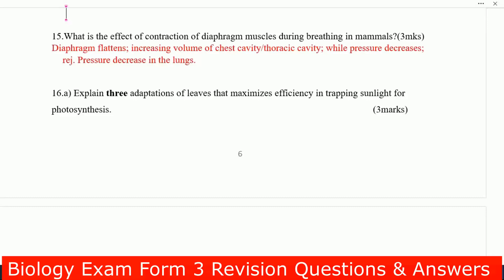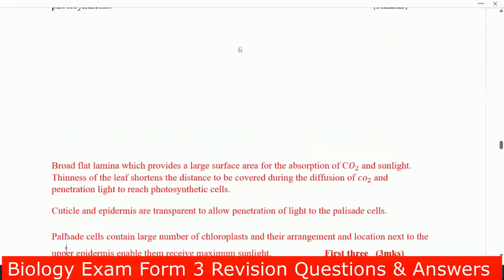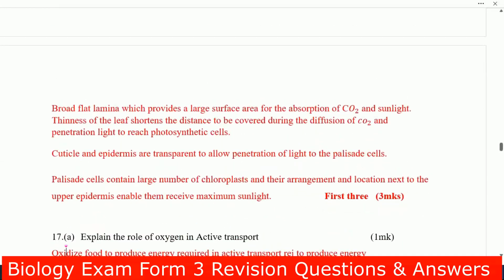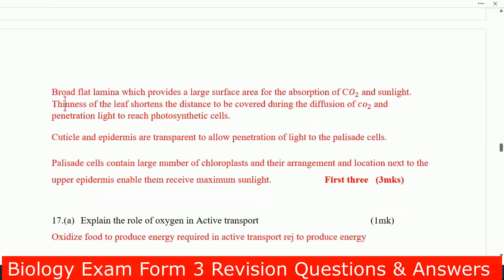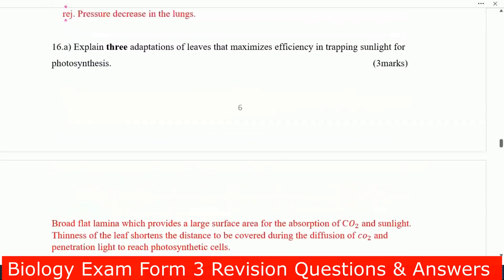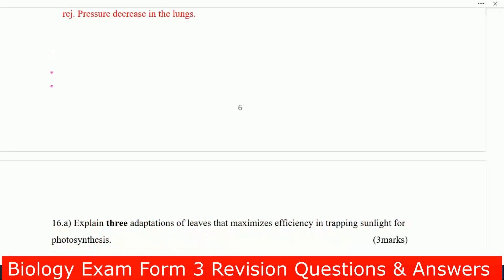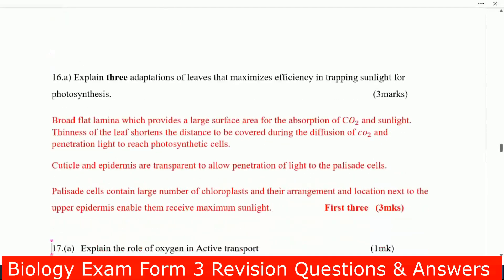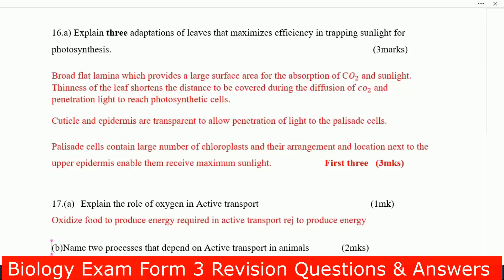Number 16, explain three adaptations of leaves that maximizes efficiency in trapping sunlight for photosynthesis. Let us bring this question here so that we can understand it properly.